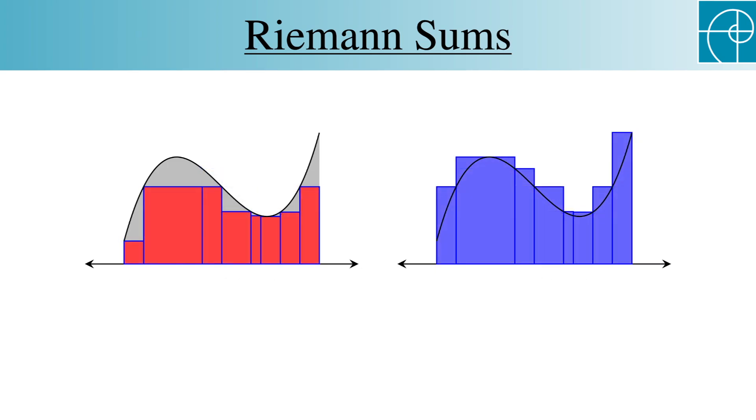In these graphs, we're using the minimum and maximum values of the function on each subinterval to determine the height of the rectangles. On the left, we're using the minima, and we call this the lower sum, and denote it by L sub f of P. On the right, we're using maxima, and we call this the upper sum, and denote it by U sub f of P. Notice that many of these points are endpoints of the intervals, but not all. This one, for example, isn't an endpoint, and neither is this.